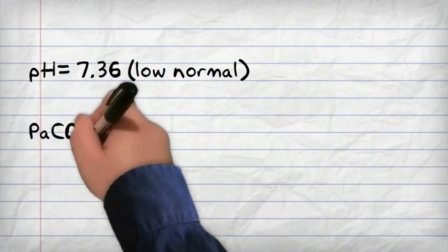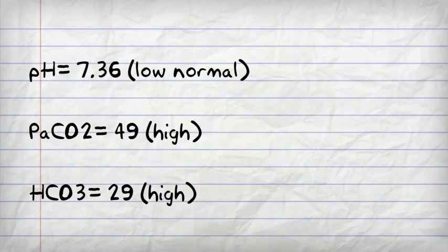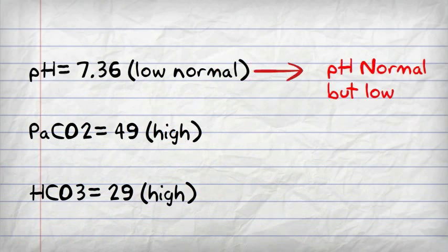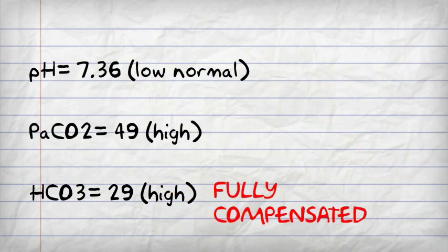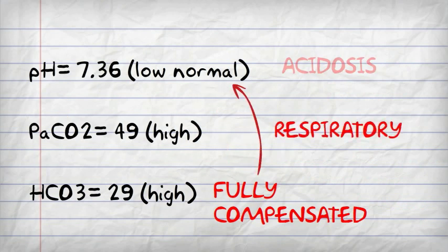Again, low normal pH, this time high CO2 and high bicarbonate. So pH is normal but low, the CO2 is high, so it's causing some sort of acidosis, but the kidneys are compensating with the bicarbonate, which is the base. So here we have fully compensated respiratory acidosis because the pH is actually normal.